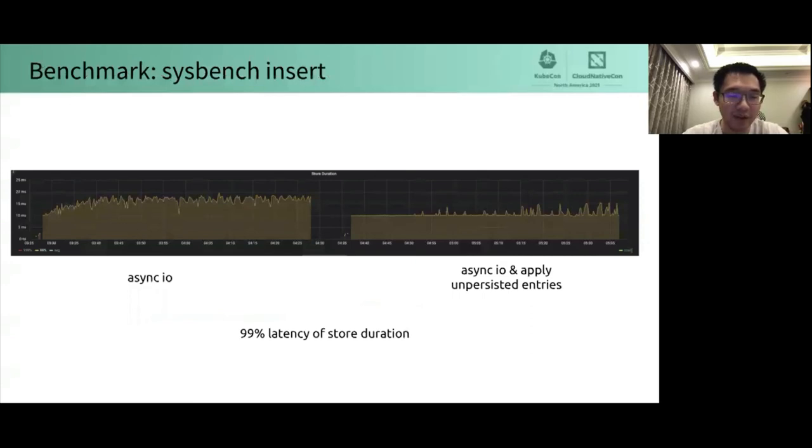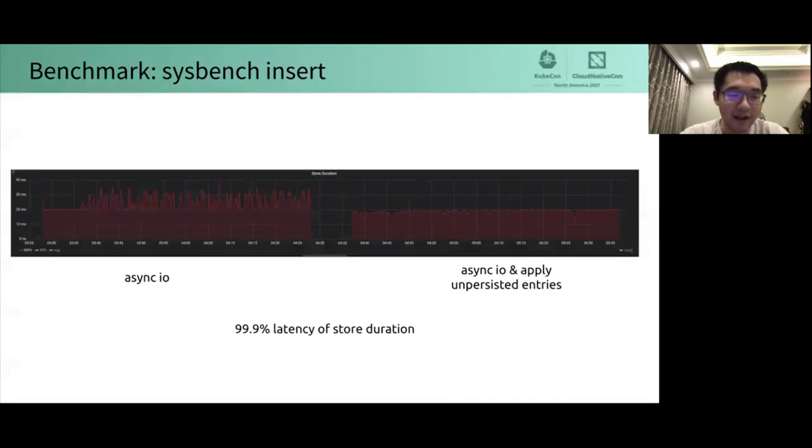Here is the Sysbench insert benchmark of the demo. You can see that the 99% tail latency is about 40% lower than the asynchronous IO version. And the 99% tail latency has less jitter than the asynchronous IO version. This shows that this optimization effect is quite good.